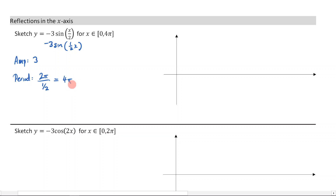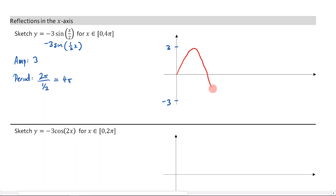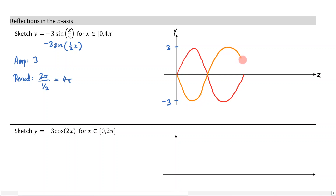This is where we need to be careful — we have a reflection going on, so we're not just going to draw a normal sine graph. Let's remind ourselves of the amplitude: we're going 3 up and 3 down. A positive sine graph goes up, down, up. But if we're reflecting in the x-axis, it's going to go down, up, down instead.